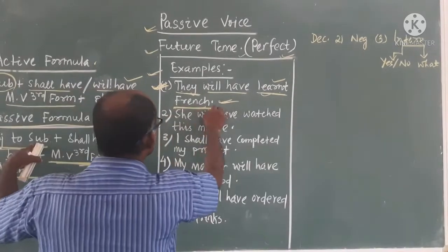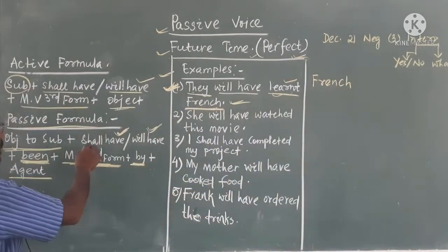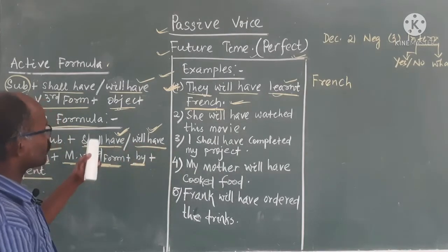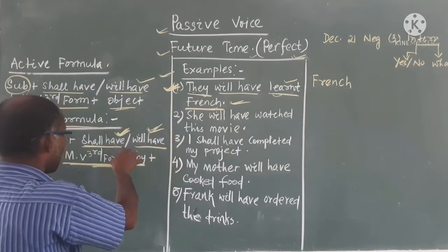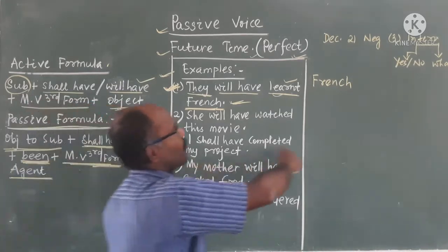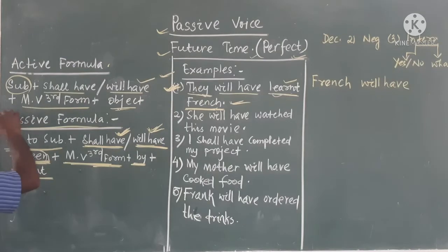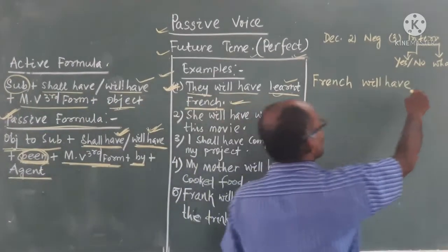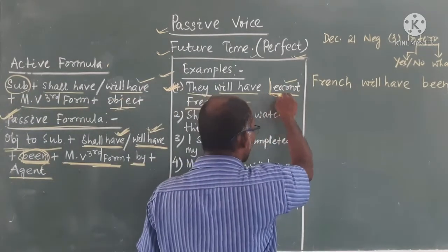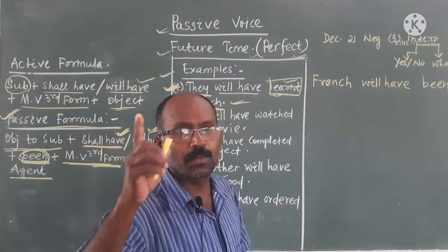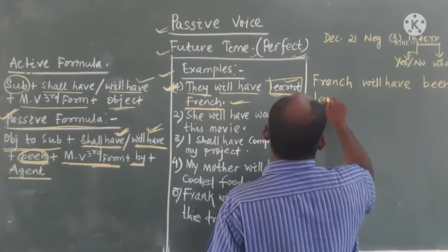For the declarative passive, remember: bring the object to subject position. 'French' is the object, so French comes first. Then the formula: will have — you can choose shall have or will have. After will have, add 'been'. Then main verb third form: learn→learned. So: 'French will have been learned.'